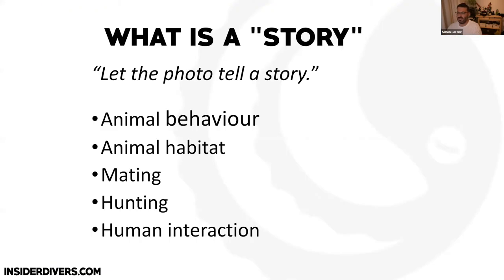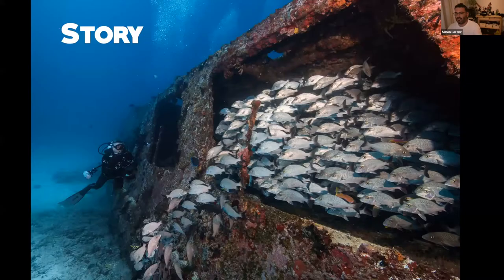We talked about what makes a story — animal behavior, habitat, mating, hunting, and human interaction. Those are all topics, particularly in wide-angle, that help you make a photo come to life. Here's an example of storytelling: you have the diver, the wreck, and animals that live in the wreck — very many story elements in one photo.